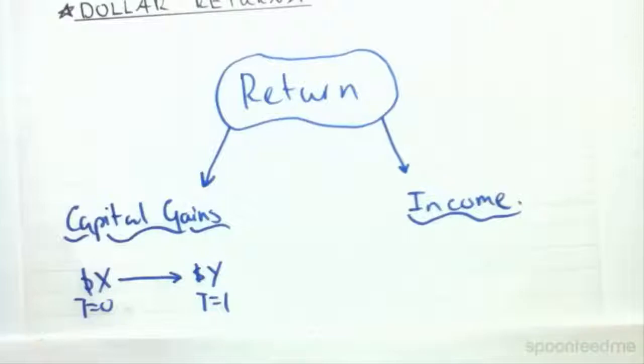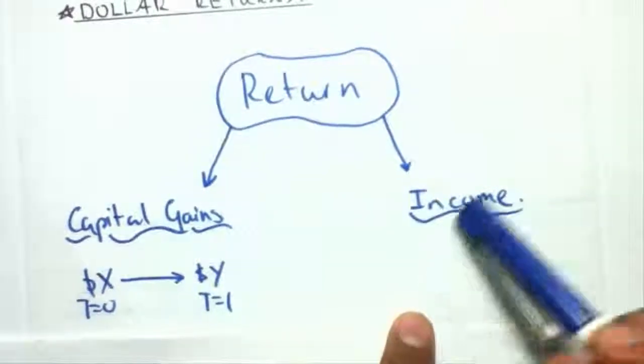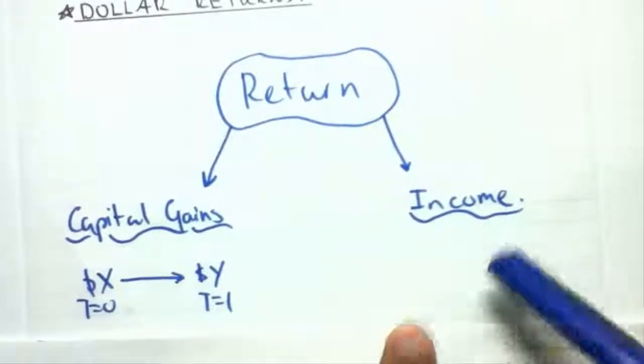Income, on the other hand, is a return in the form of dividends—money that is generated by the asset without you giving the asset away. You hold something like shares, for example, and every period you'll get paid a dividend and that dividend comes under income.